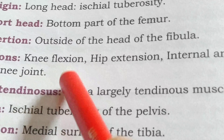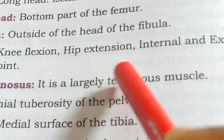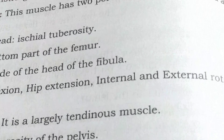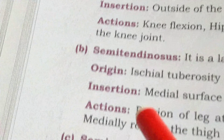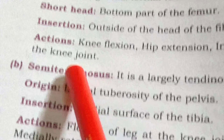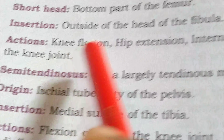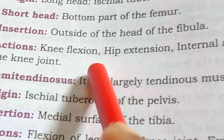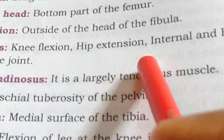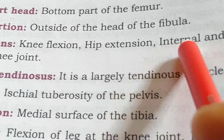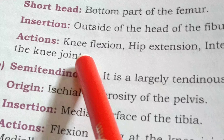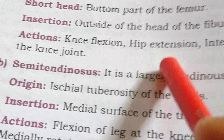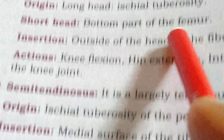The actions of biceps femoris are: knee flexion, hip extension, and internal and external rotation of the knee joint. With the help of this muscle, we can extend our knees and hip region, bend them, make them flexible, and rotate them in different directions.